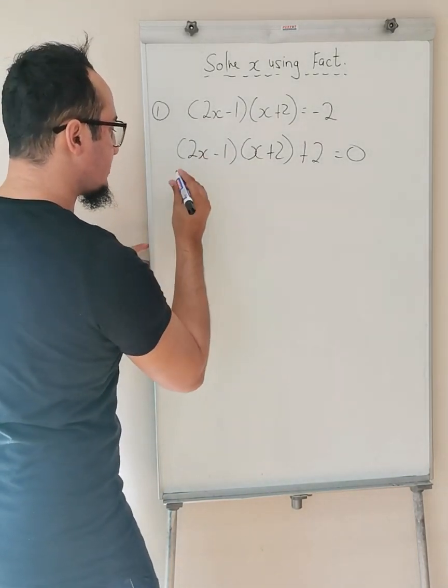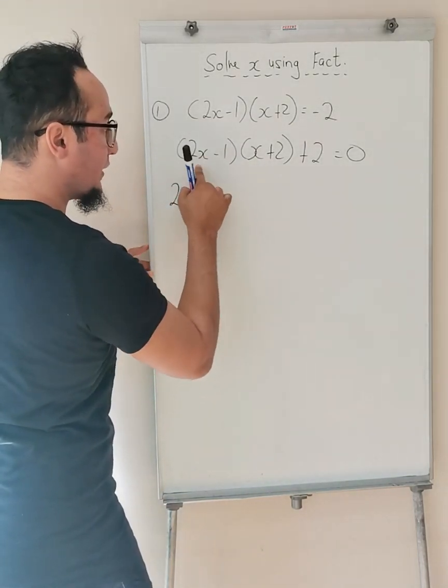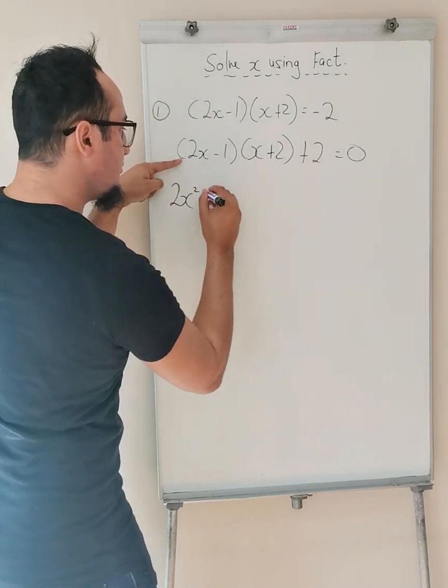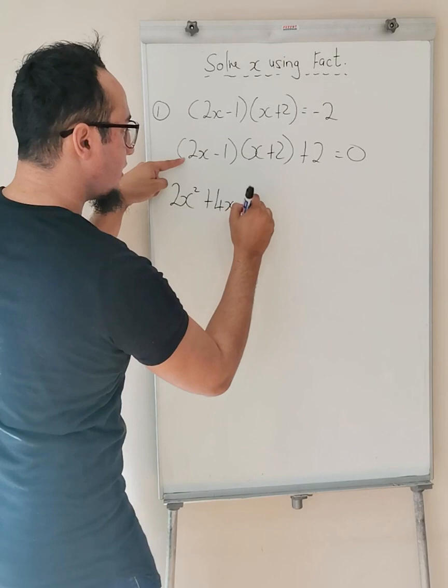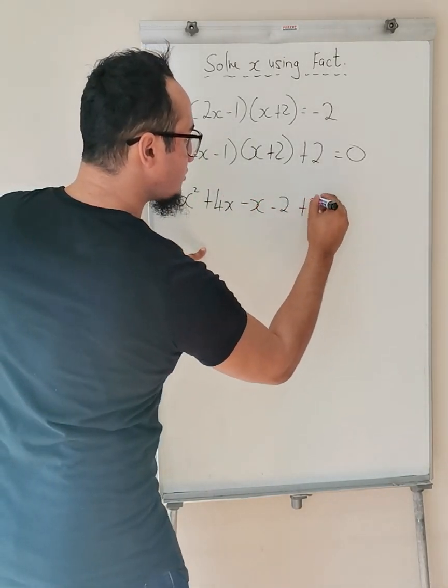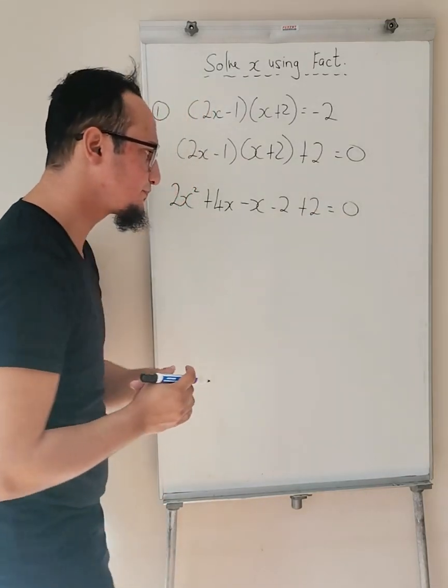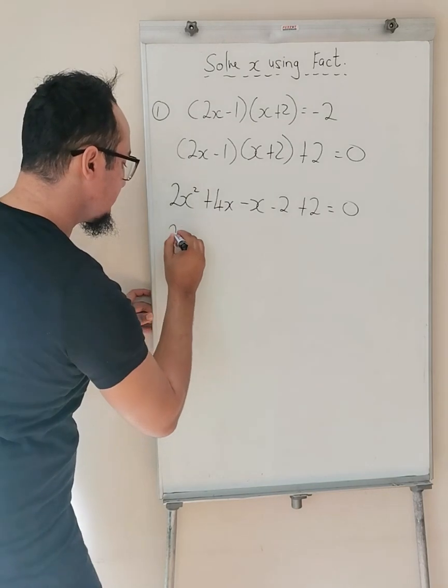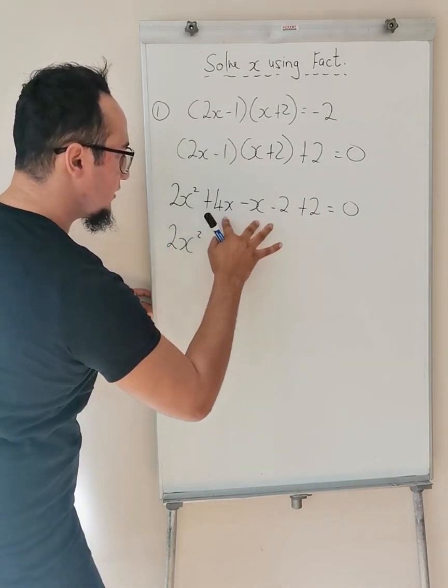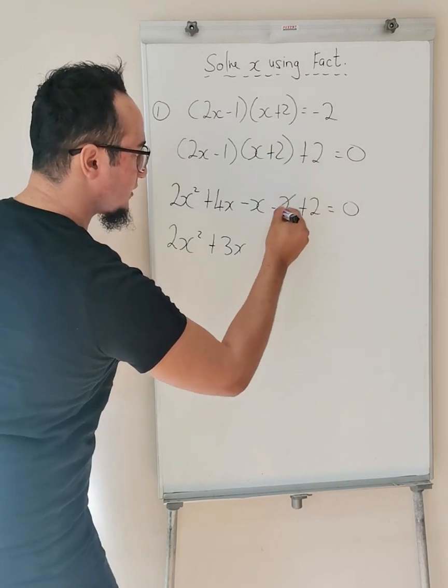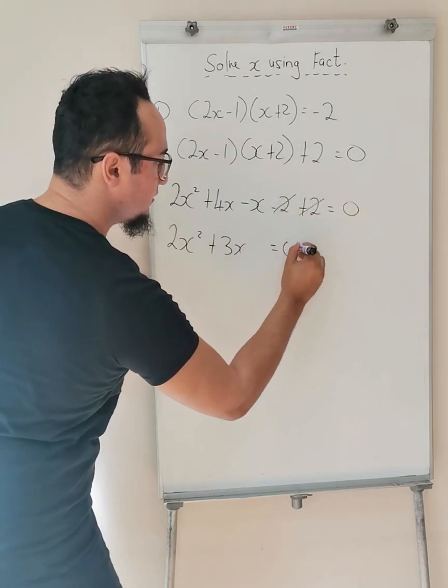So 2X times X is 2X squared. Multiply these two, 4X, these two, negative X minus 2 plus 2 is equal to zero. Next step, make sure I add like terms. So 2X squared, these two are like, plus 3X, these two are like, they cancel each other out, and they're equal to zero.